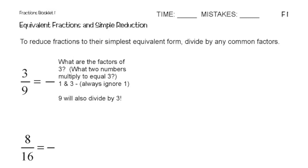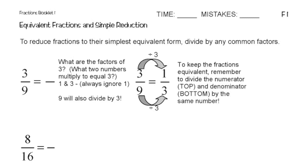So what I'm going to do is, I'm going to have 3 ninths, and I'm going to divide both top and bottom by 3. So you see 3 divided by 3, and that gives me 1. You see 9 divided by 3, and that gives me 3. So basically, to keep the fractions equivalent, remember you need to divide the numerator and denominator by the same number. What you do to the top, you must also do to the bottom. So my final answer in simplest form in this case is 1 third.